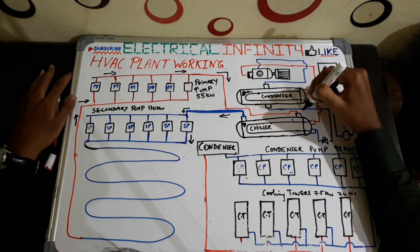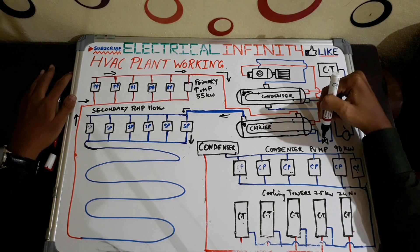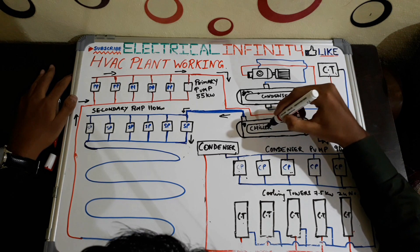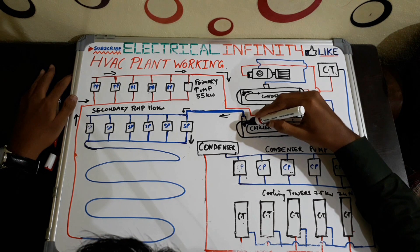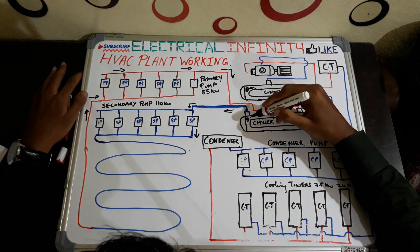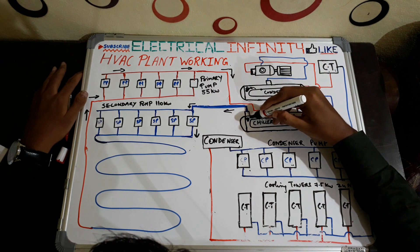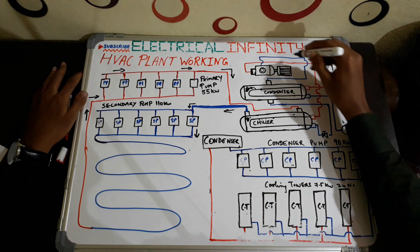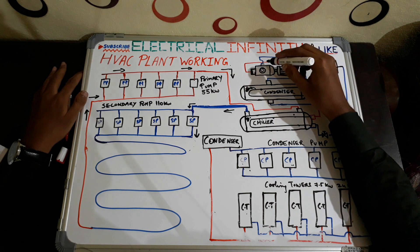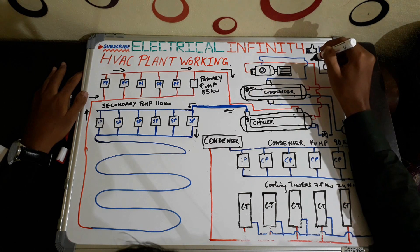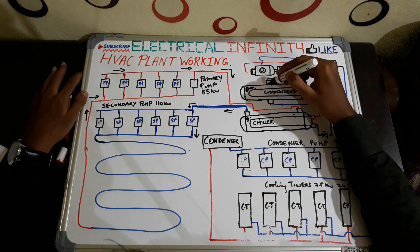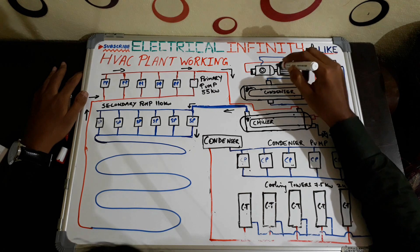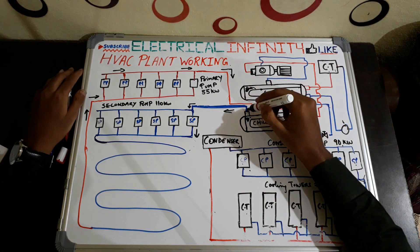After the refrigerant is cooled, it is sent to the chiller through the expansion valve, which decreases the pressure of the refrigerant. In the chiller, the cool refrigerant is in the tube type and the high-temperature water is in the shell type. Heat exchange takes place between the low-temperature refrigerant and the high-temperature water — the water gets cooled and the refrigerant gets heated. The heated refrigerant is transferred to the compressor, compressed, and the high-temperature, high-pressure refrigerant is sent back to the condenser.